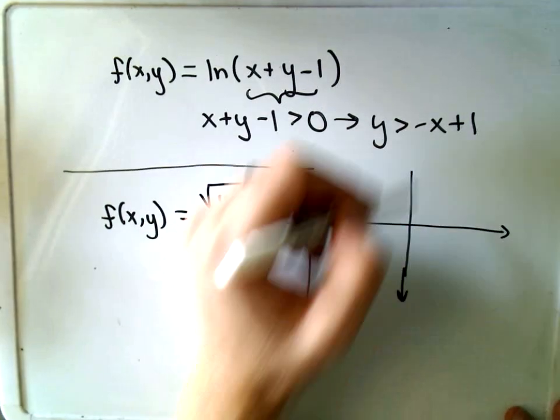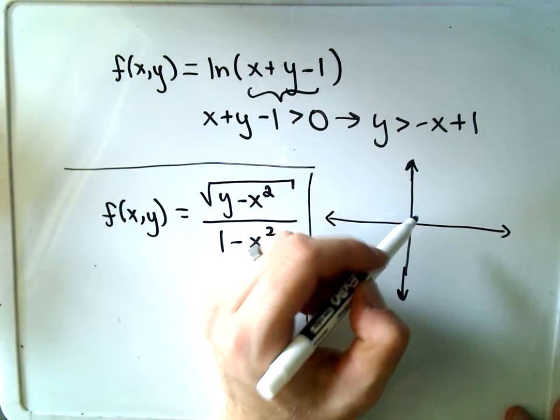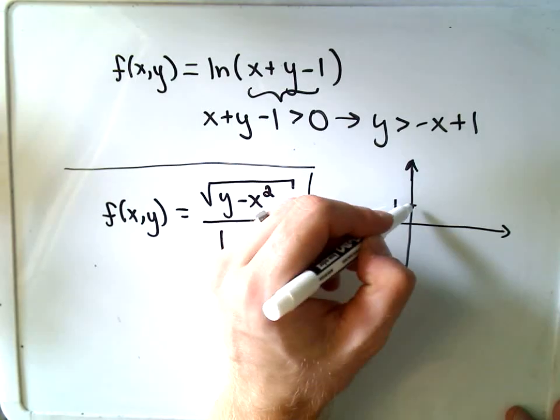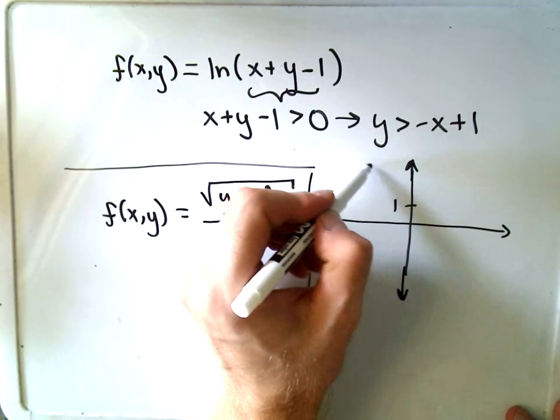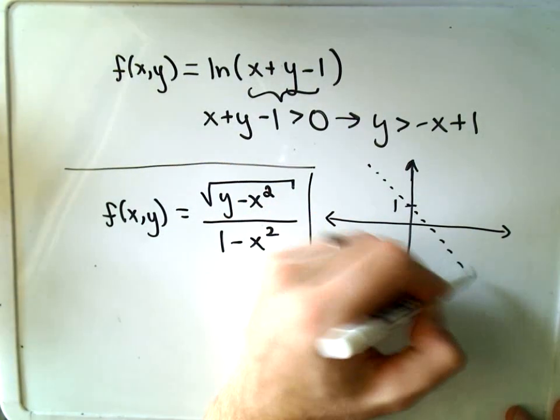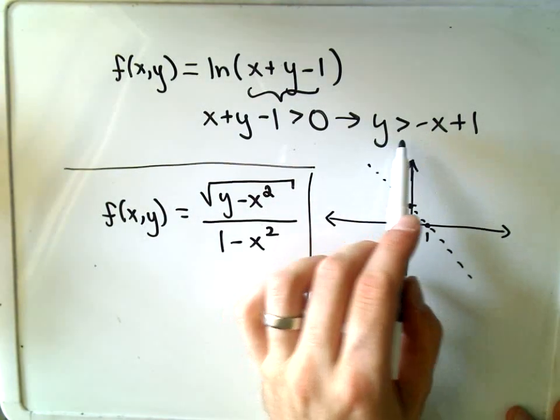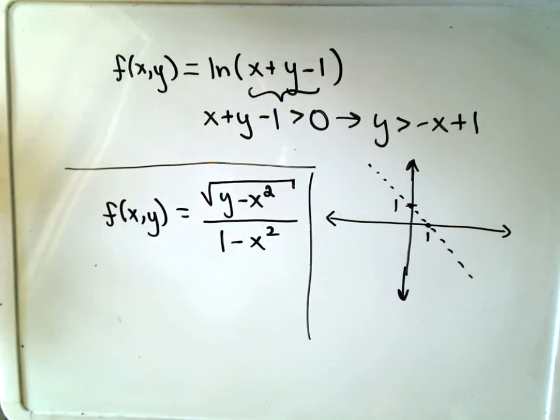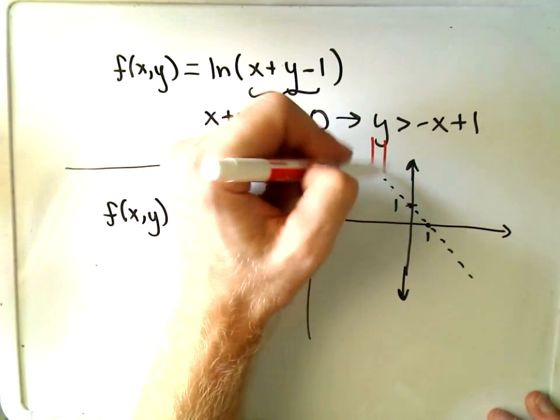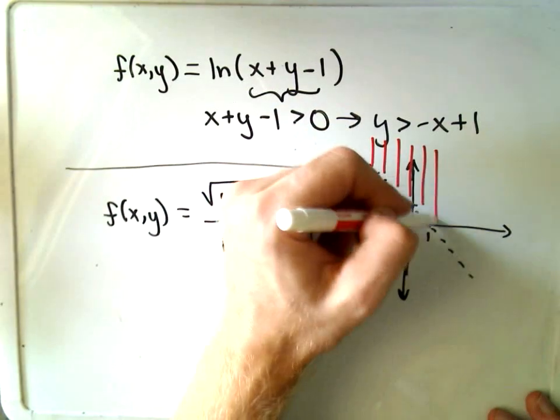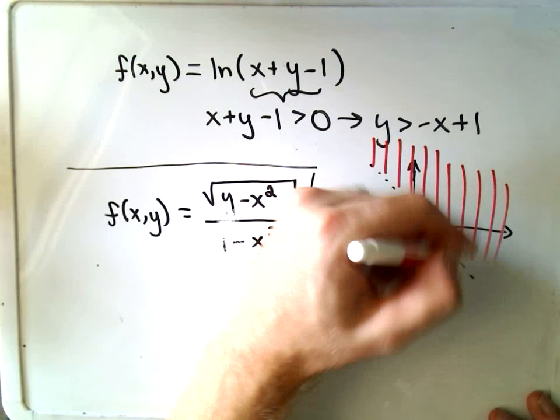Well, negative x plus 1, that's a line that goes through the y-intercept of 1, has a slope of negative 1. And since y has to be strictly greater than that, we use a little dashed line, and the domain would be the set of x and y-coordinates above that line.